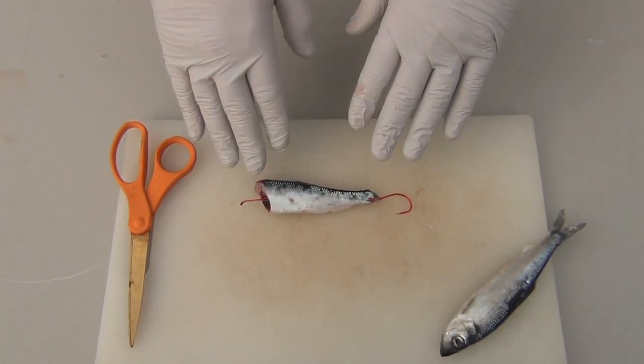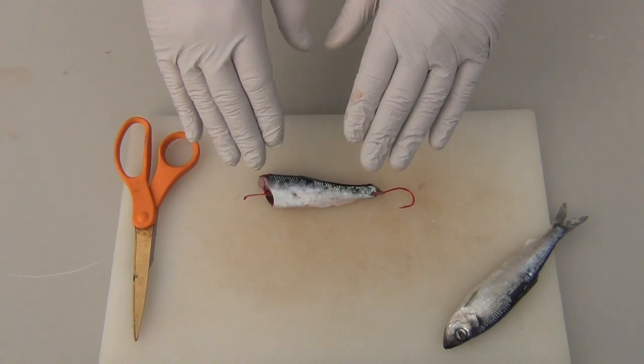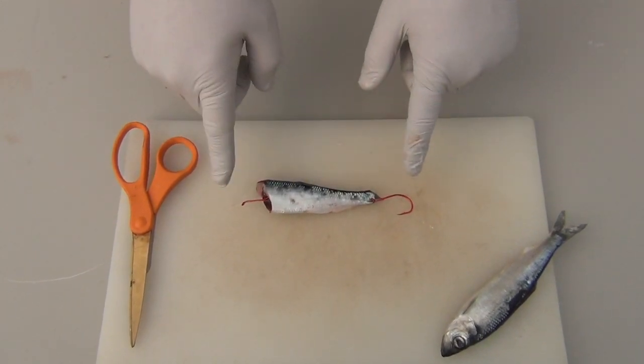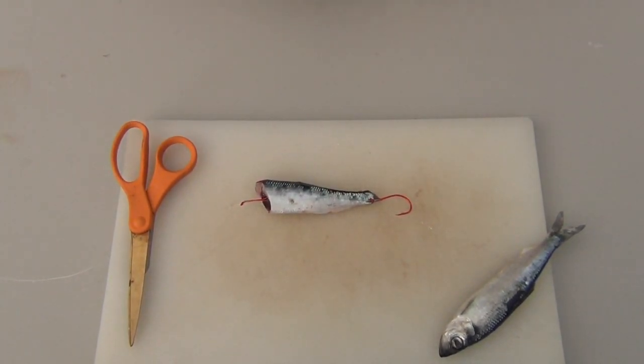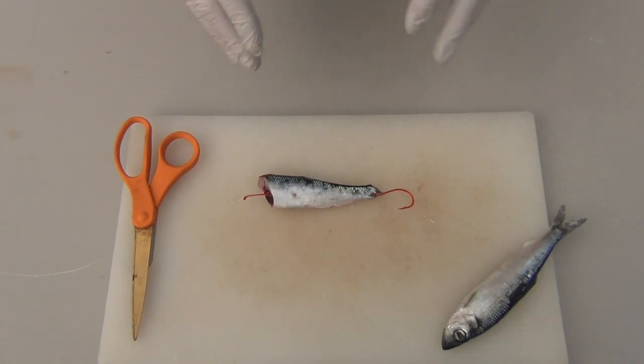So here you have it, guys. This is cut plug herring, this is how to get it cut, how to get your hooks into it and fish effectively. Good luck on the Columbia River for springers.